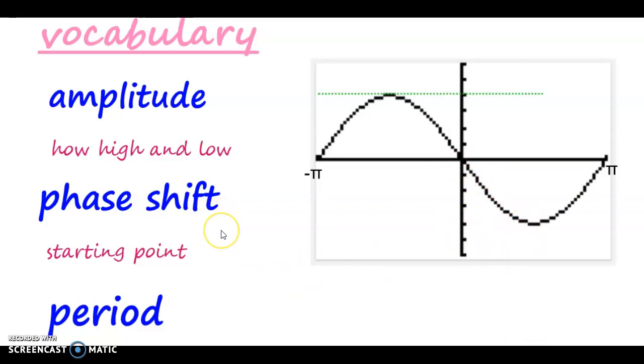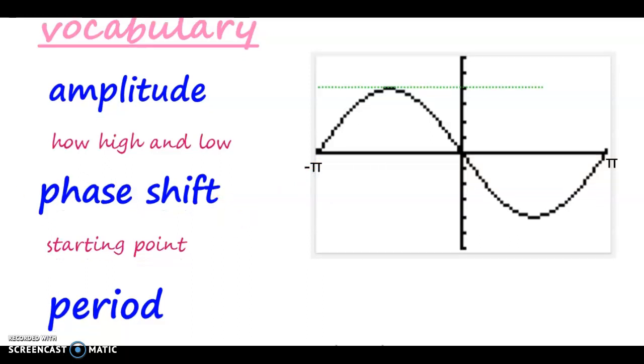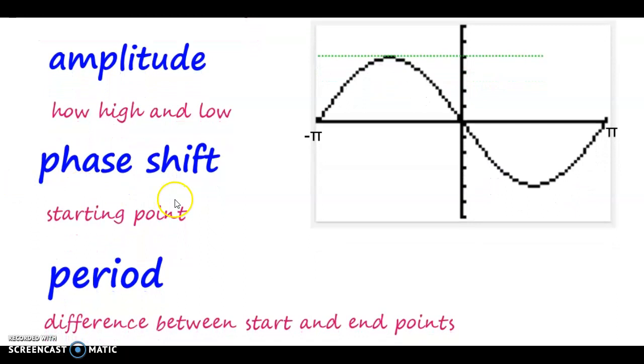The phase shift is your starting point. So for this particular graph, it starts right here. Starting point is negative pi. That would be the phase shift. The period is how long it is from the beginning to the end. So this one here, we have pi, negative pi. The difference between the two of them would be 2π. So the period is 2π.